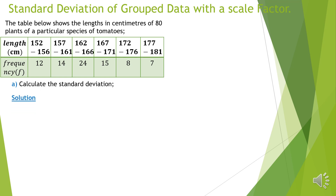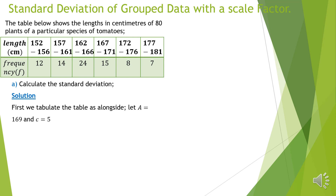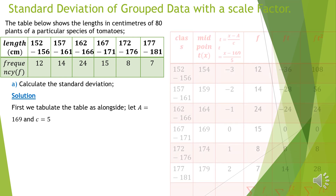To go through the solution, first we are going to tabulate a table. In that table, we are going to let our assumed mean be 169 and the scaling down factor be 5. Notice that this 5 is actually the class interval of the given data. We are going to tabulate the table as provided alongside.